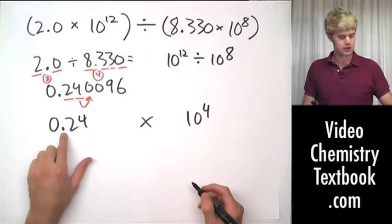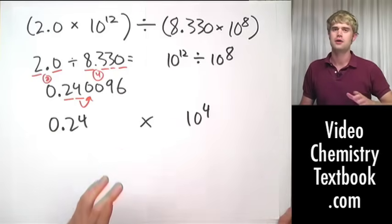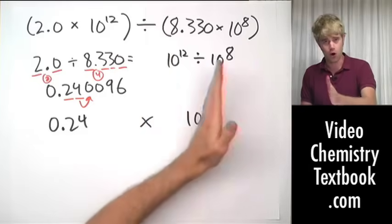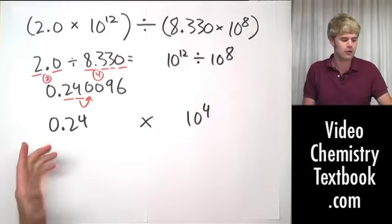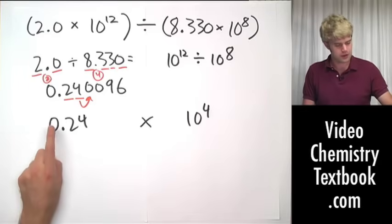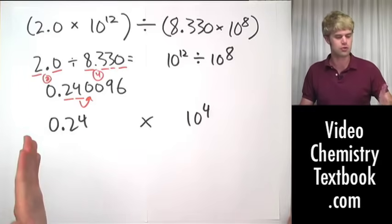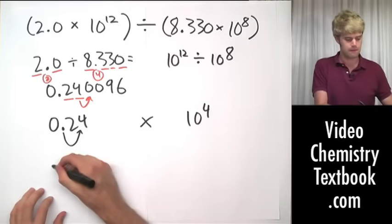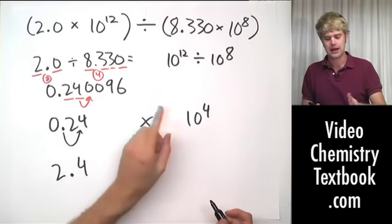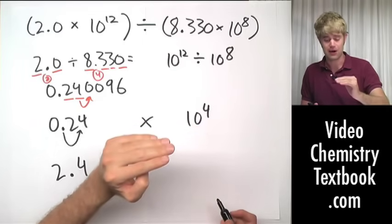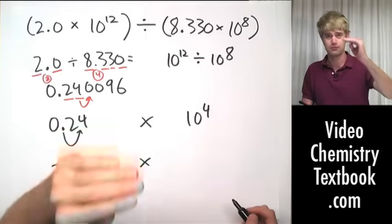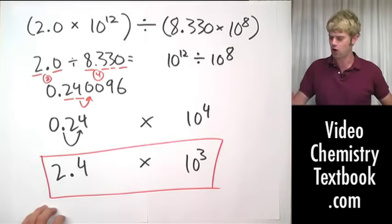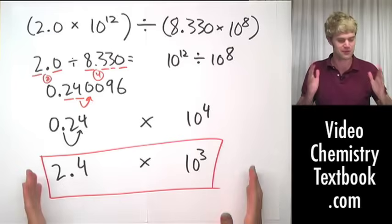So is 0.24 times 10 to the 4th our final answer? It's not, because correct scientific notation is always written with one digit, then the decimal place, then all the other digits — one digit to the left of the decimal. Here we have a zero to the left, so we change 0.24 to 2.4. To do that, I move the decimal place one spot to the right. When we move the decimal to the right, we take the exponent and move it down — so from 10 to the 4th, one down to 10 to the 3rd. Now the answer is in correct scientific notation with the correct number of significant figures.